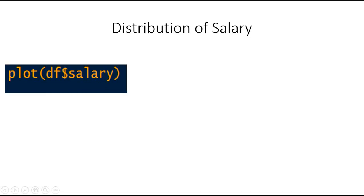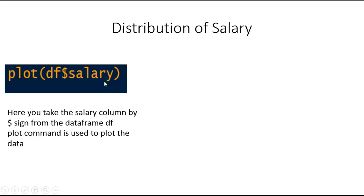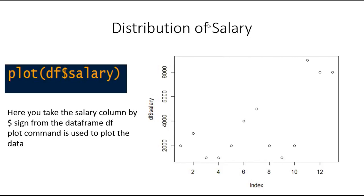So what will this plot? This will plot something like this. The salary will be on the y-axis and on the x-axis you will get the index. Index means that this is the first person's salary, the second person's salary is here, and the third person's salary is somewhere here.